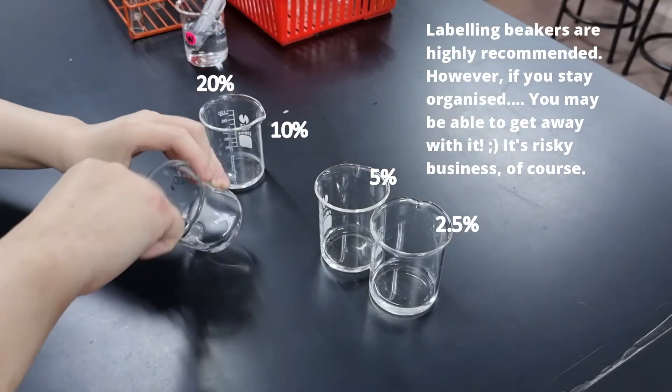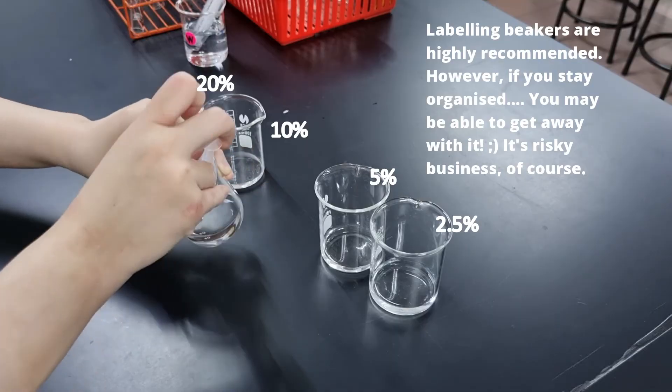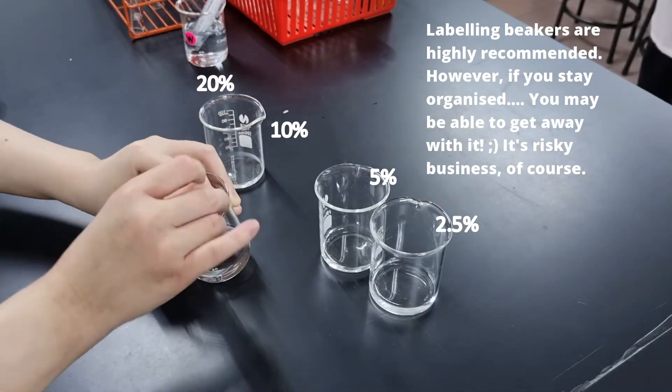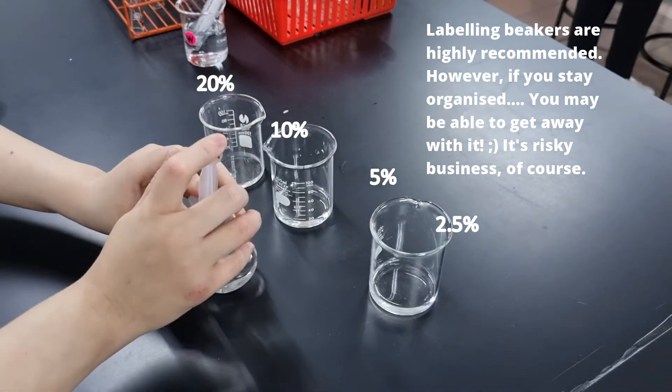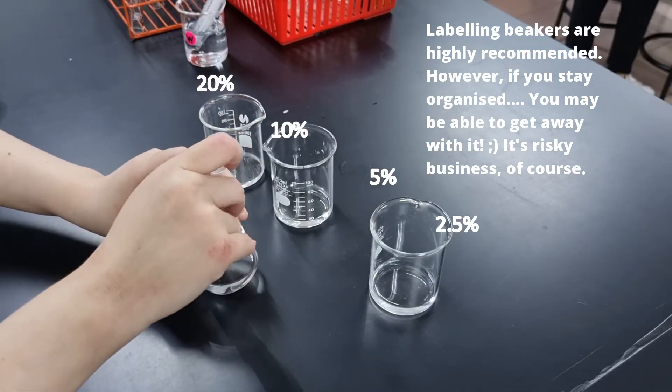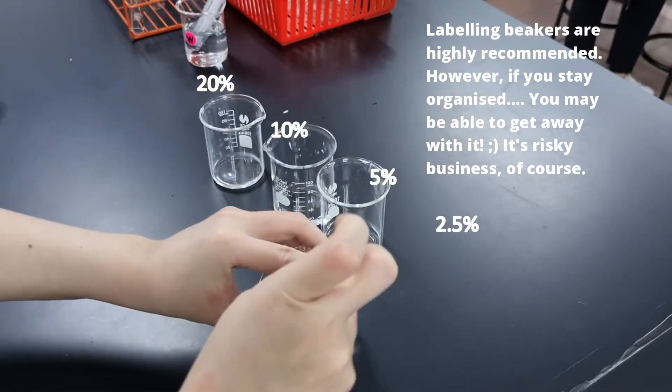So take 10 cm cubed, transfer into the next beaker, and then pipette up and down using the syringe in order to mix properly, and then transfer it into the next beaker. So here we have it for concentrations.